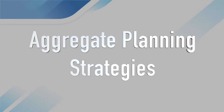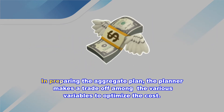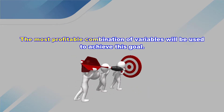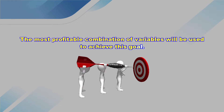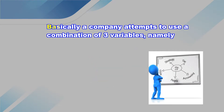In the last episode we discussed the role of aggregate planning in supply chain. In this episode we will discuss the different aggregate planning strategies. In preparing the aggregate plan, the planner makes a trade-off among various variables to optimize the cost. The most profitable combination of variables will be used to achieve this goal.